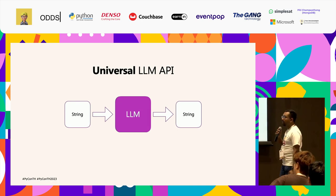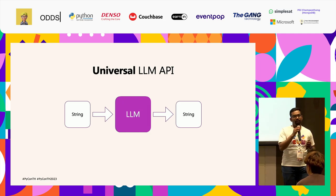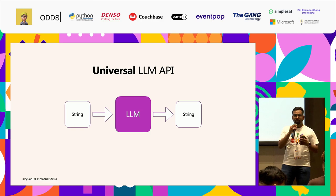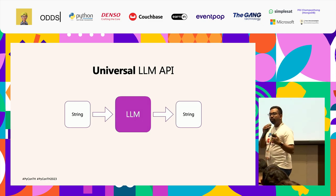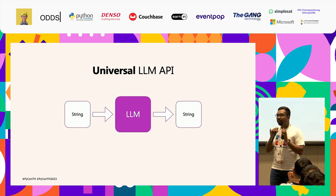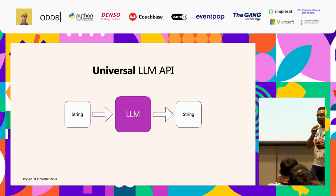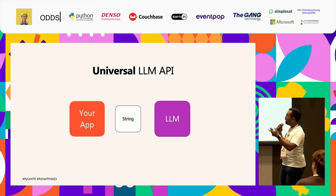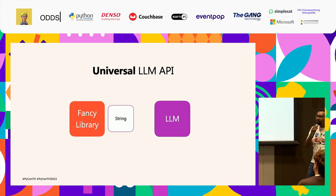Let's look at the universal LLM API. Regardless of what LLM chain, what library, what model you use — this is the universal LLM API. It takes a string of tokens as input and outputs a string of tokens. That's it. Whatever you've been thinking — oh, I can input JSON and it outputs JSON — don't think of it like that. In your mental model, always think that it's taking raw text and pushing back raw text. This will become very helpful as you build applications. Always think your app is sending a string to the LLM, and the LLM is sending back a string.